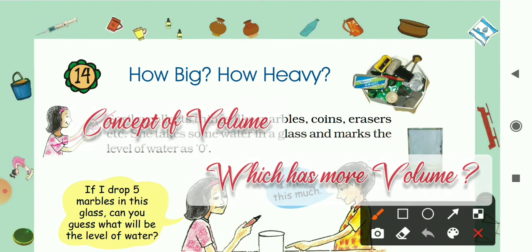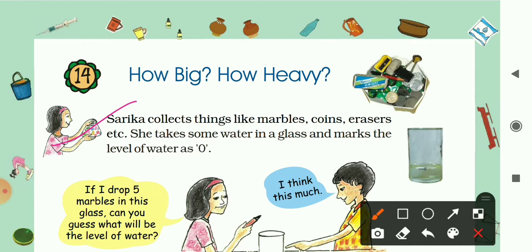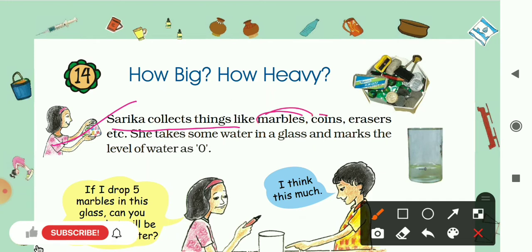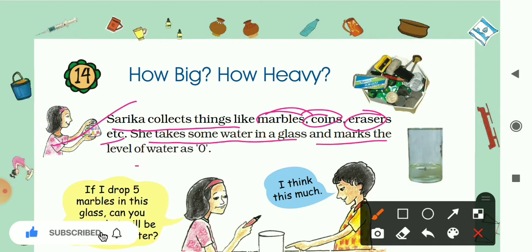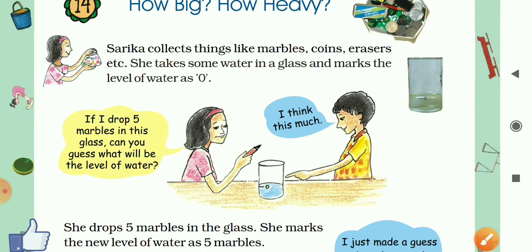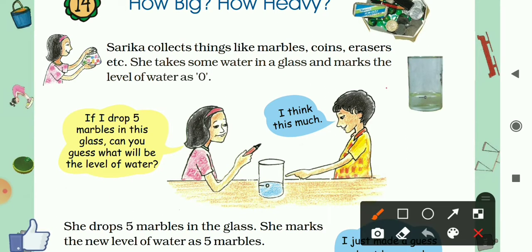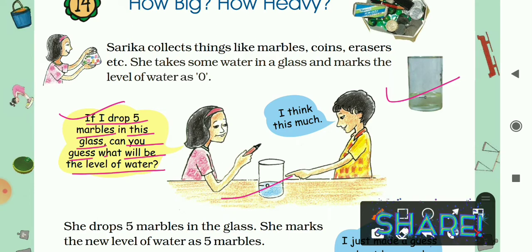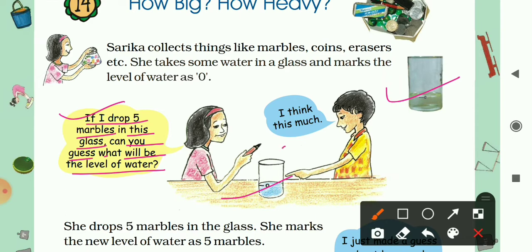Through this story we will try to learn the concept of volume. Sarika collects things like marbles, coins, and erasers. She takes some water in a glass and marks the level of water as zero. She then says: if I drop five marbles in this glass, can you guess what will be the level of water?